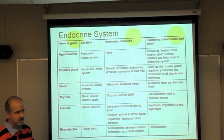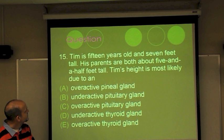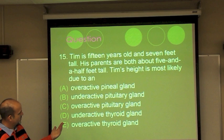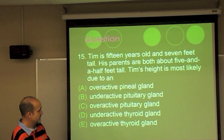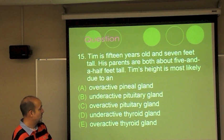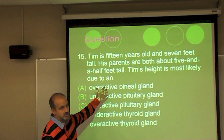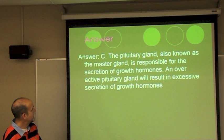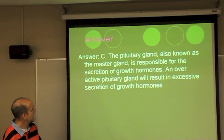Test question: Tim is 15 years old and seven feet tall while his parents are both about five-and-a-half feet tall. His height is most likely due to which gland — pineal gland, underactive pituitary, overactive pituitary, underactive thyroid, or overactive thyroid? The pineal gland produces melatonin for sleep — not relevant. The thyroid controls metabolism. The answer is C — an overactive pituitary gland, which is in charge of the growth hormone.